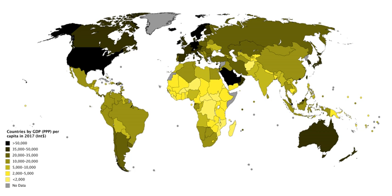The PPP method of GDP conversion is more relevant to non-traded goods and services. If high-tech weapons are to be produced internally, their amount will be governed by GDP rather than nominal GDP. There is a clear pattern of the purchasing power parity method decreasing the disparity in GDP between high and low income countries, as compared to the current exchange rate method. This finding is called the Penn Effect.